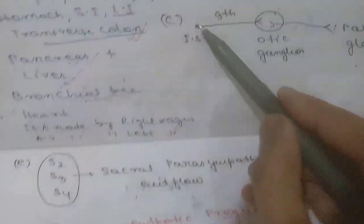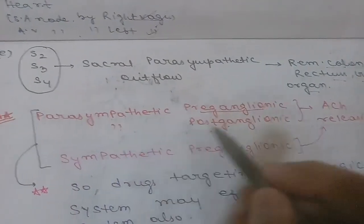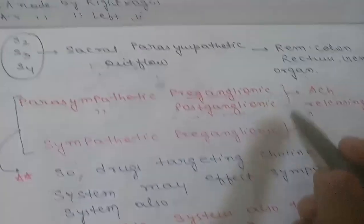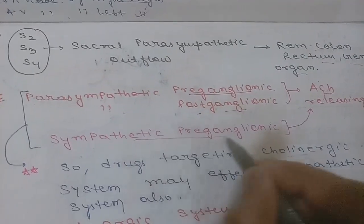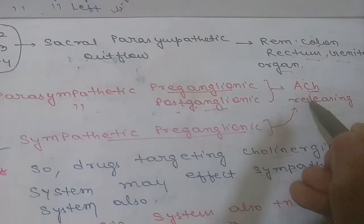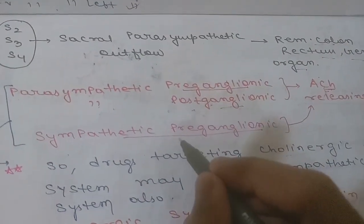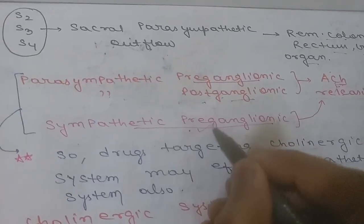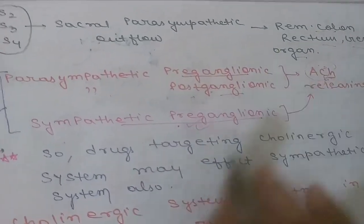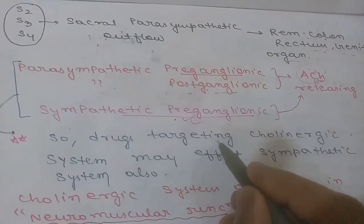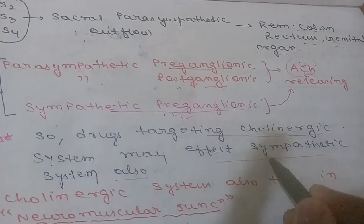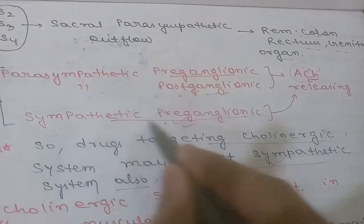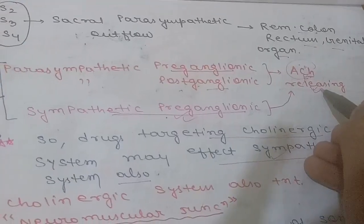Both parasympathetic pre-ganglionic and post-ganglionic fibers secrete acetylcholine. Sympathetic pre-ganglionic fibers also release acetylcholine, while sympathetic post-ganglionic fibers release norepinephrine. Therefore, a drug targeting the cholinergic system will also affect the sympathetic system, because sympathetic pre-ganglionic fibers release acetylcholine.